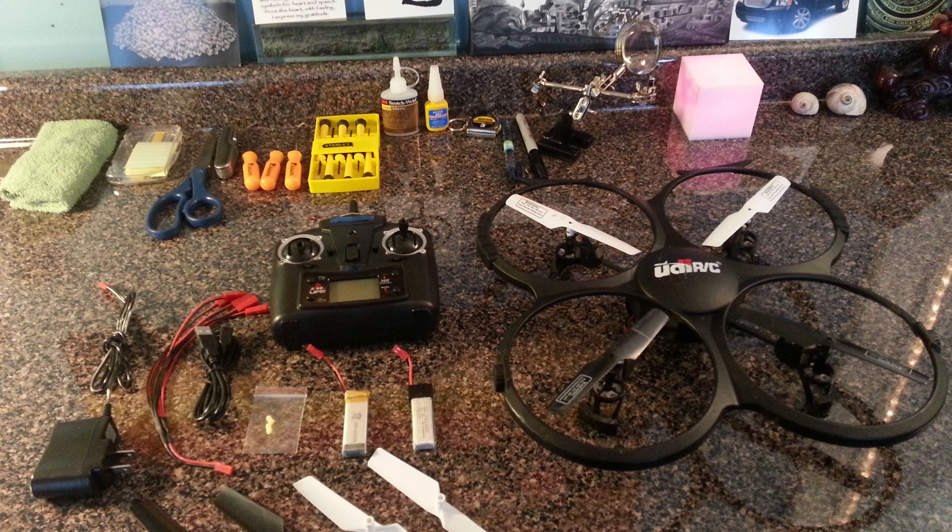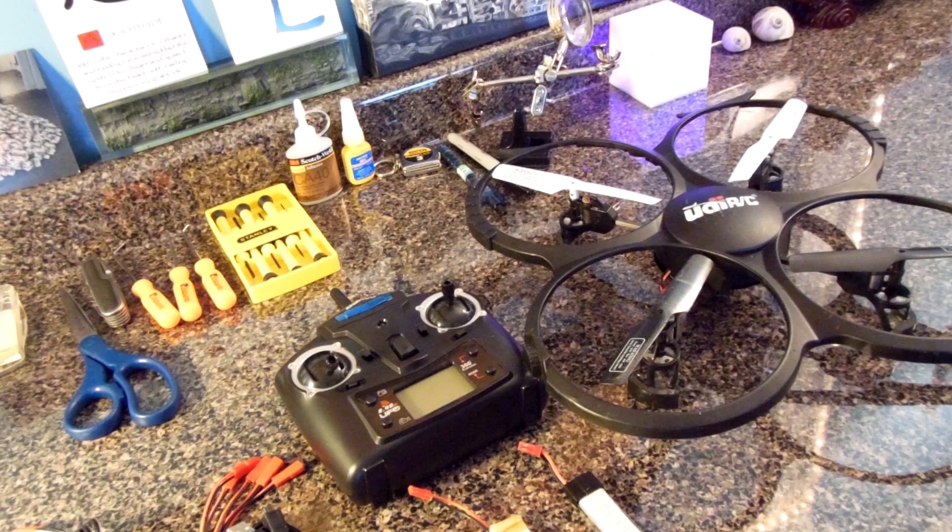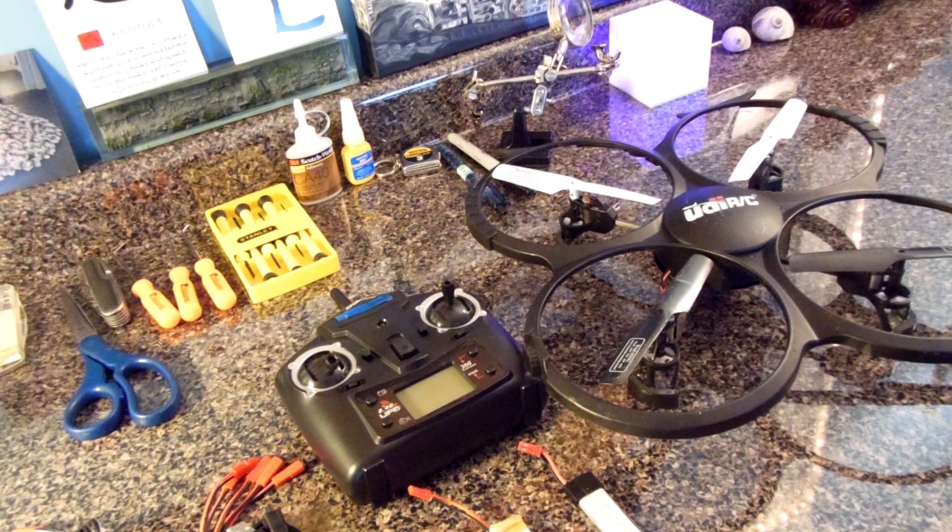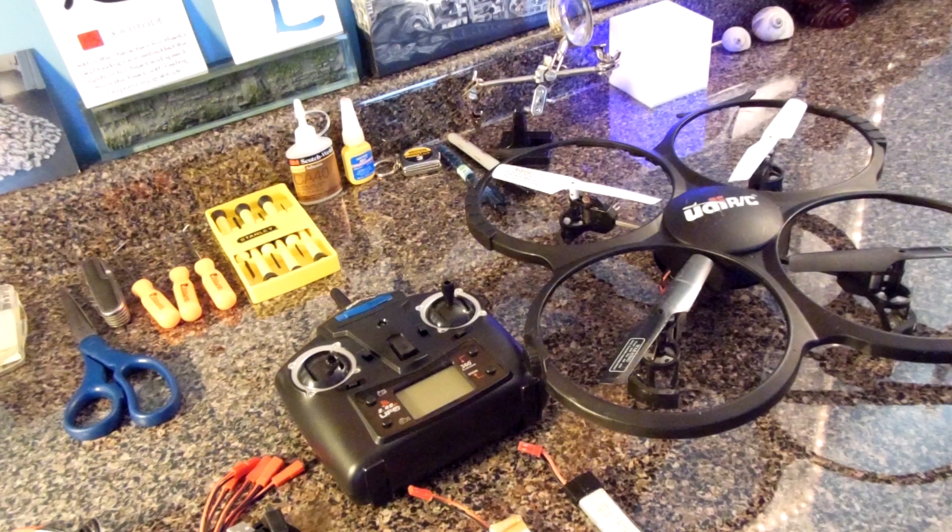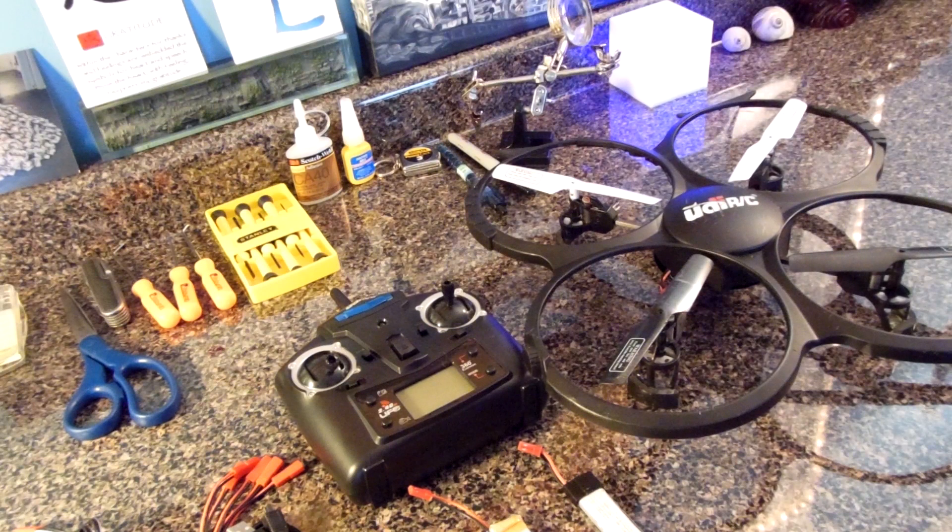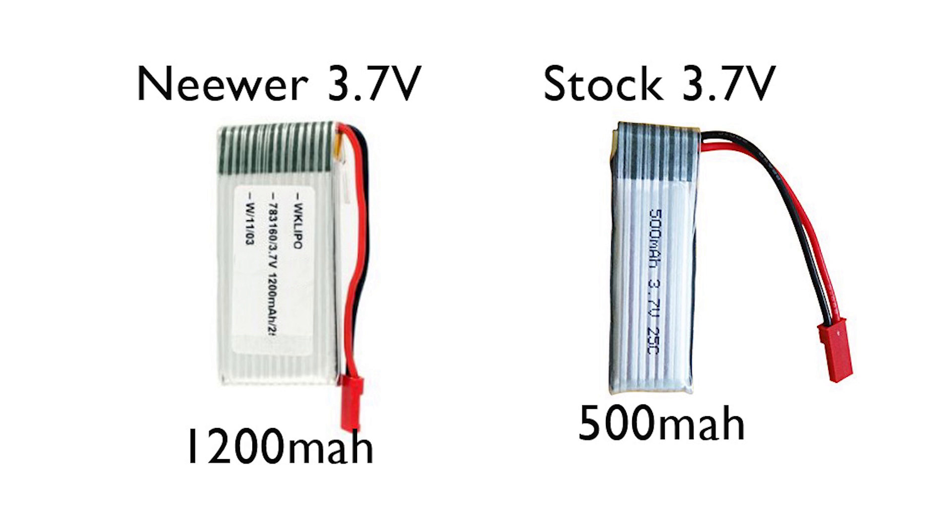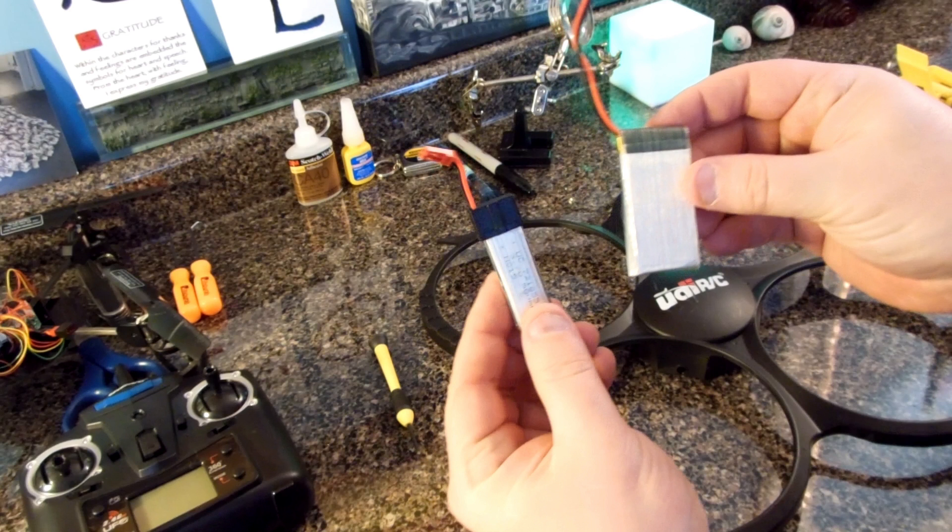Hey everyone, Tony Boston from thinkqube.com. In this video we're going to look at the UDI quadcopter U818A. We're going to do a modification to accept a bigger battery from Neewer. It's a 3.7 volt which is stock for this quadcopter, but it's a 1200 milliamp hour battery as opposed to the stock 500 milliamp hour battery.